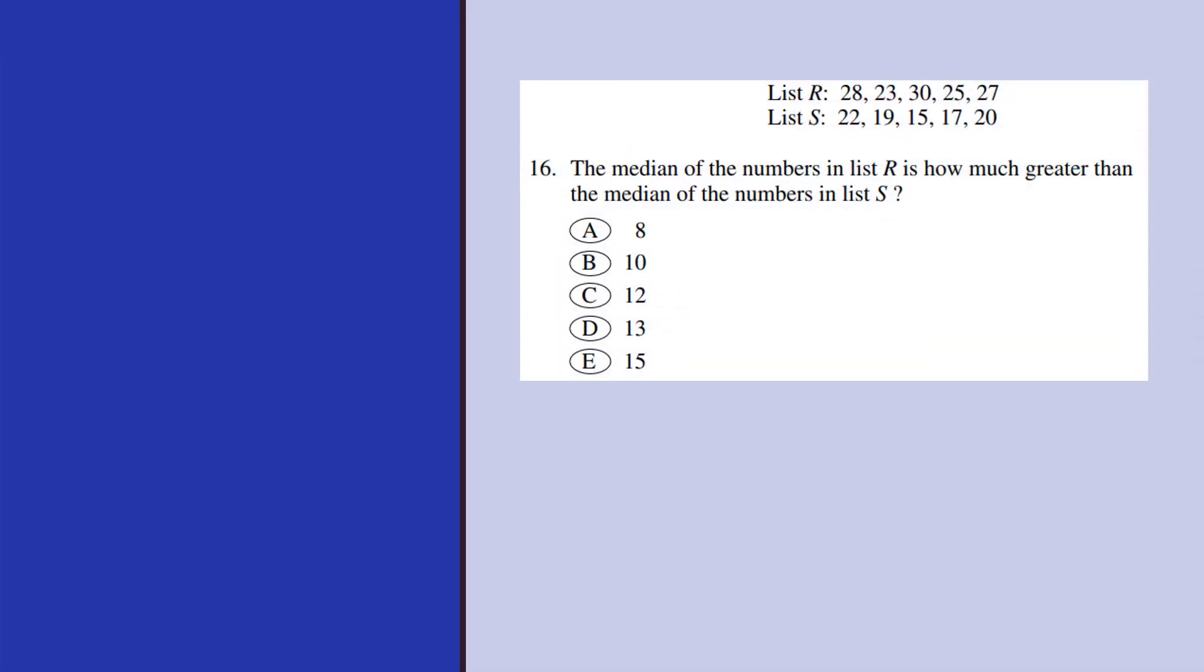We have two lists, list R and S. We are trying to find the median of R and the median of S. Once when you get the median of R and the median of S, the question is, we have to find how the median of the list R is greater than the median of the numbers in list S.